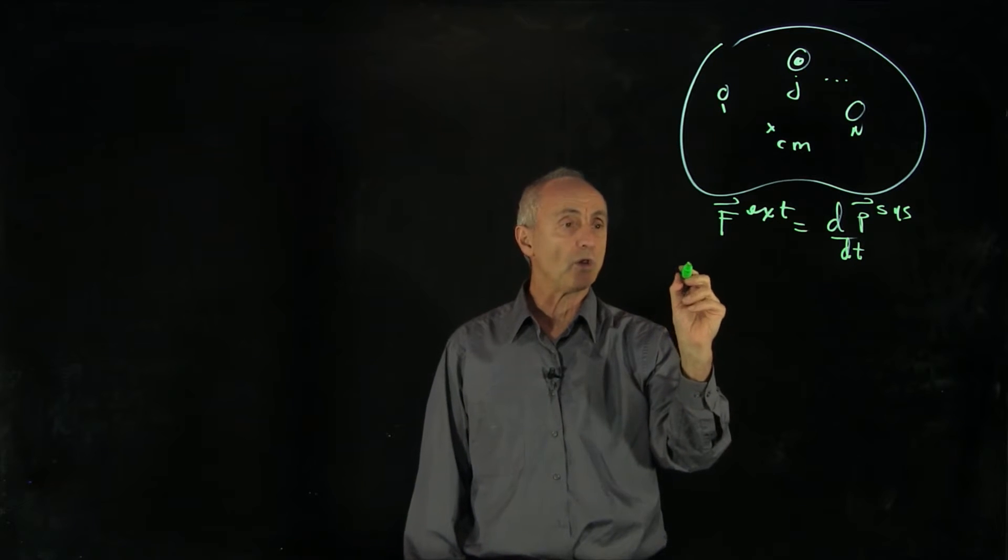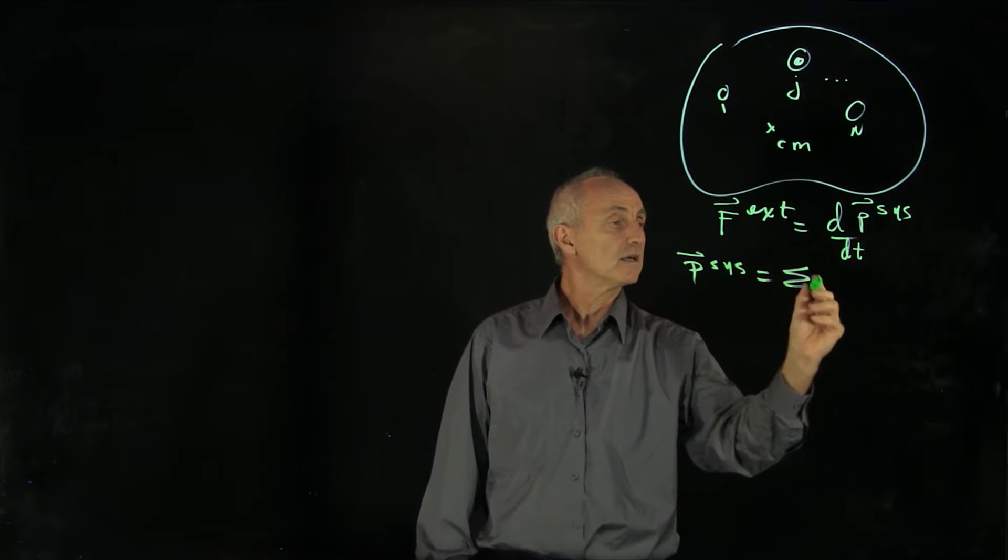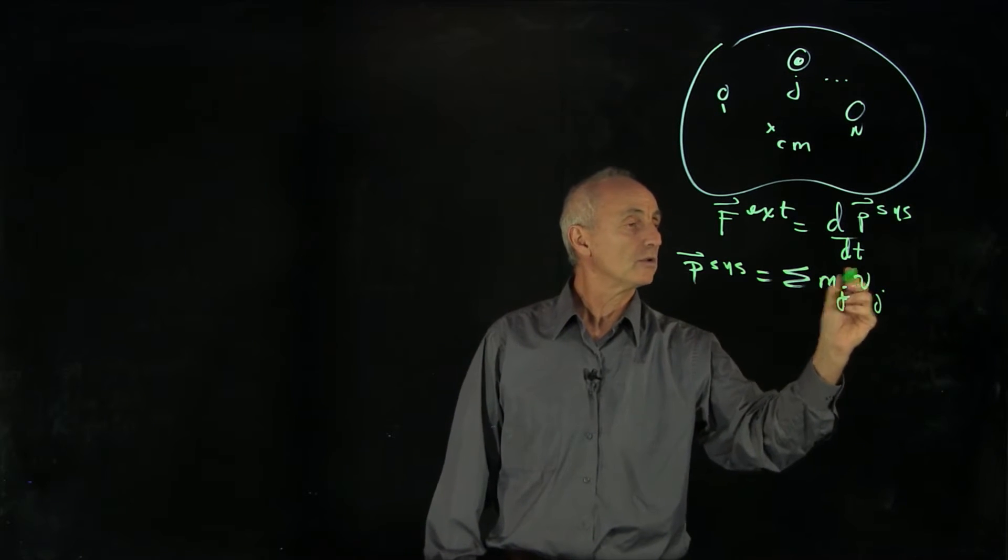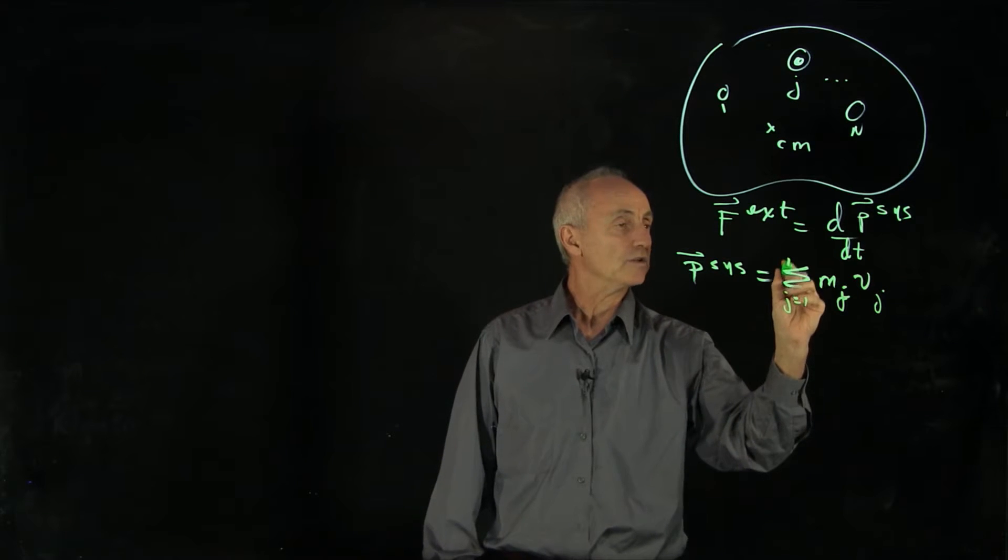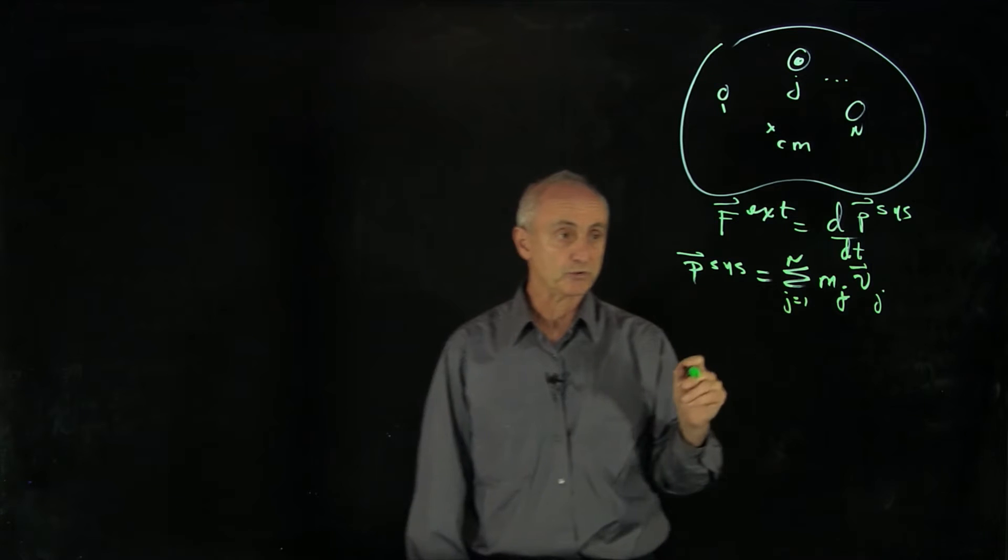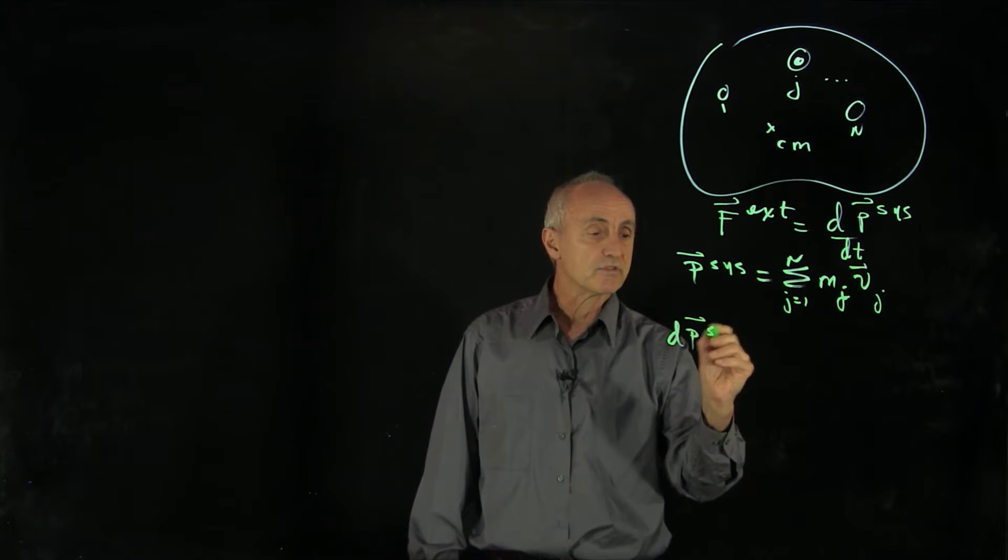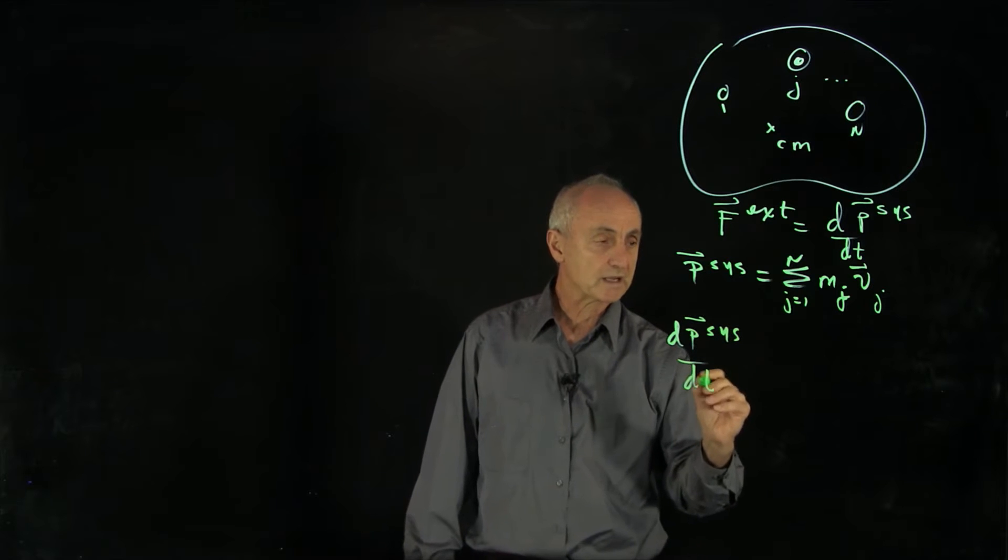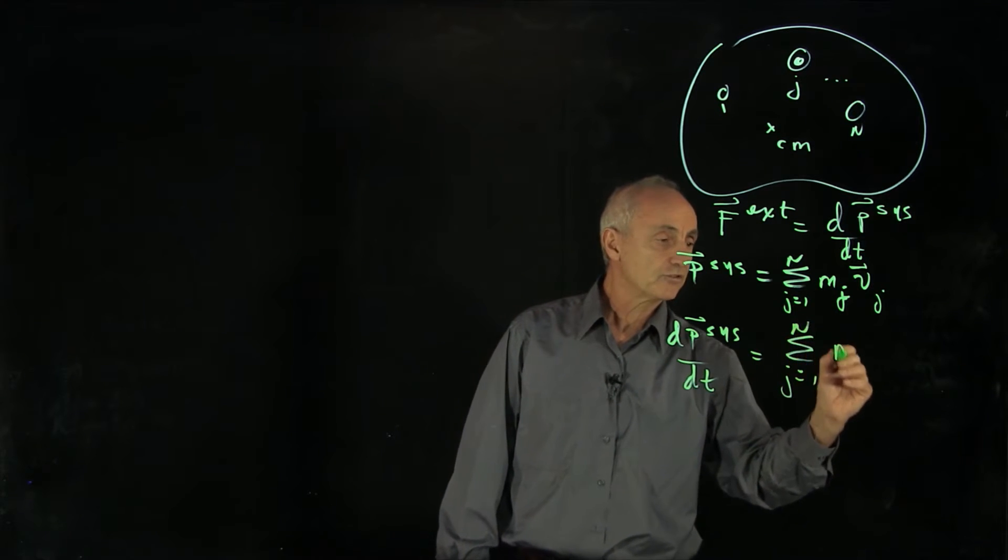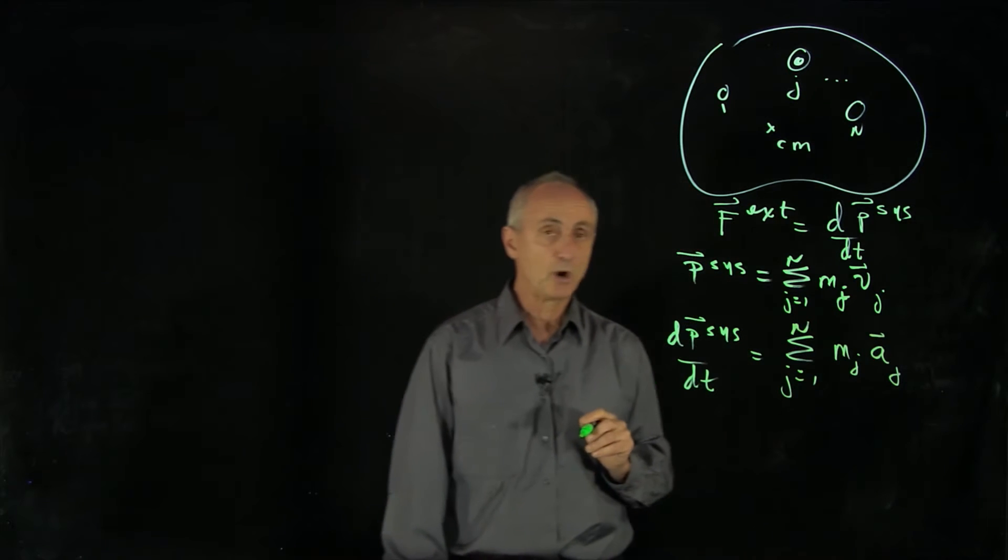The way we'll do that is recall that the momentum of the system is given by the sum of the individual momentums. We'll call that the j-th particle, where we're summing j from 1 to n. And that's the sum of the momentums of the various particles. Now, when you differentiate the momentum of the system with respect to time, we're just differentiating the velocity. And so that becomes the acceleration of the j-th particle.